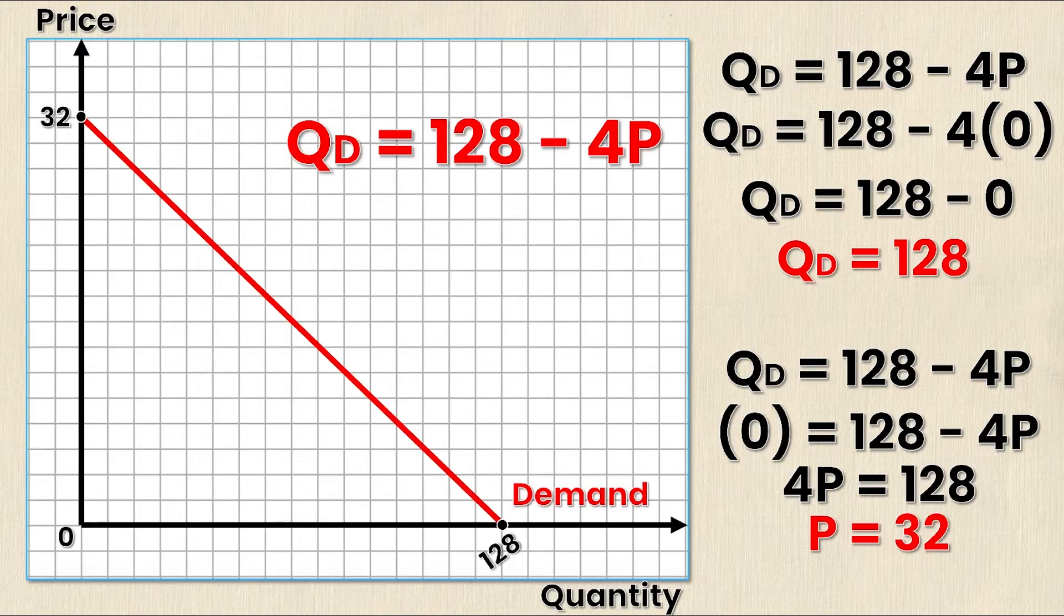So sometimes your prof or your teacher will say that this is good enough. This is a labeled demand curve. It has your price intercept and your quantity intercept. However some teachers will ask that you have multiple points labeled on the graph as well, so we're going to show you how to do that.